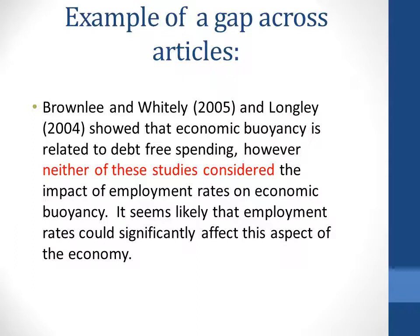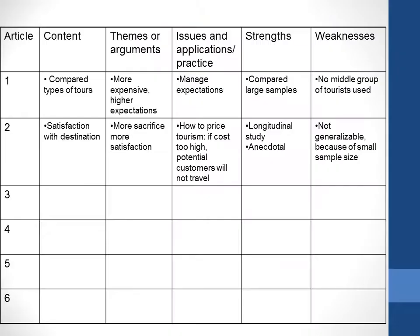This is an example of a gap across two articles. When you're trying to keep track of a lot of articles and focusing on critical thinking — looking for similarities and differences between authors — it's often useful to use a critical reading grid like this one. Record the article over here; you can put the author's name, the name of the article, or just number them.